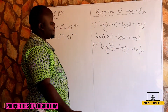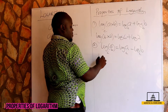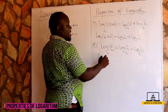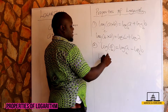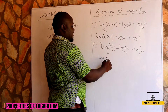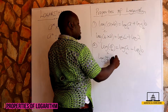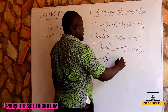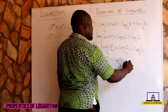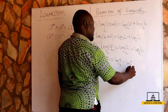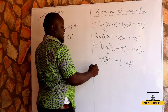An example of this would be: log to the base three of four over five. This becomes log four to the base three minus log five to the base three.